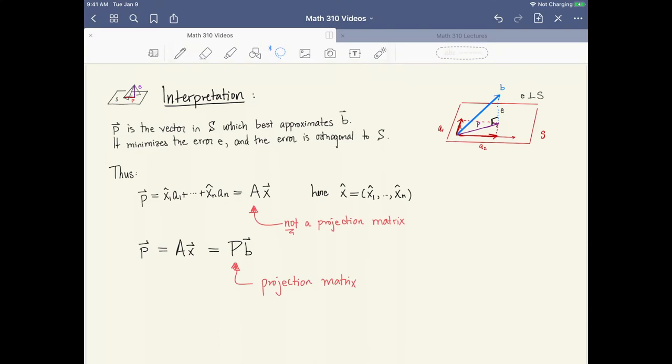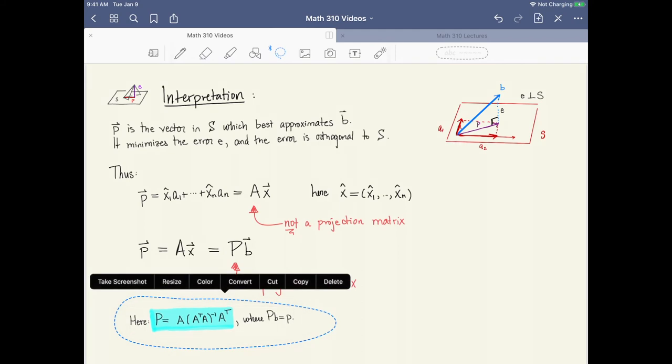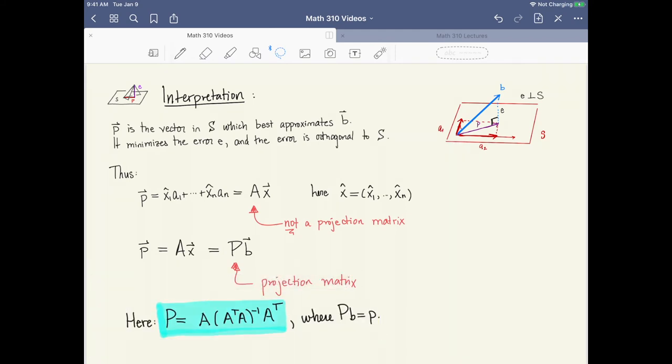So what is this matrix capital P that carries out this projection? This is the matrix A times (A transpose A) inverse times A transpose. This is our specific projection matrix capital P. Now I'd like to point out that inside of the expression for P we see A transpose A being inverted.